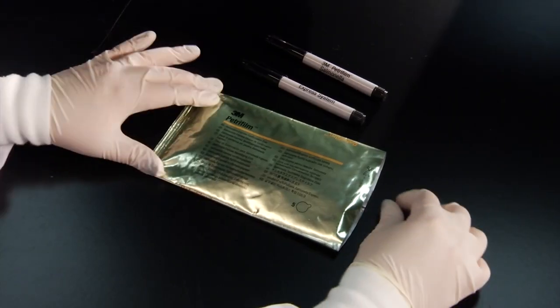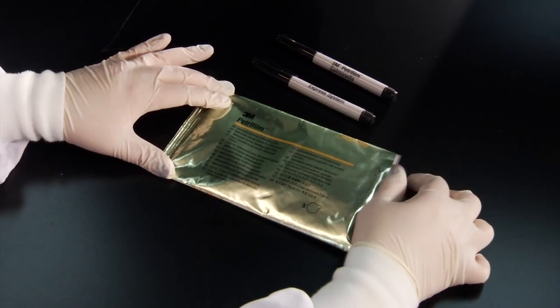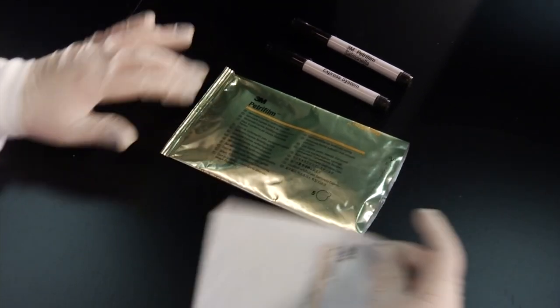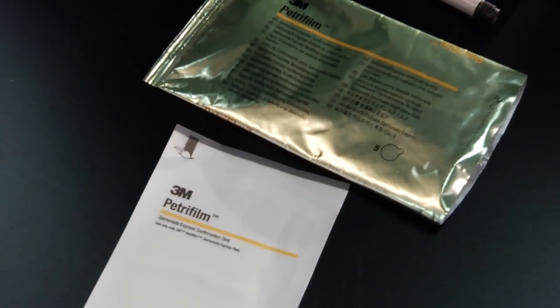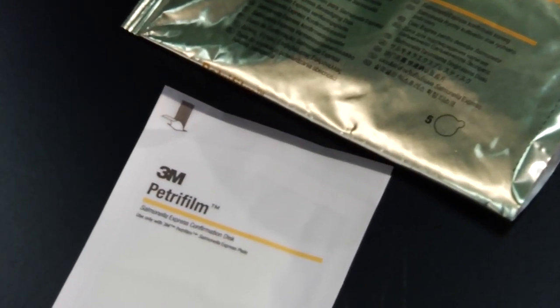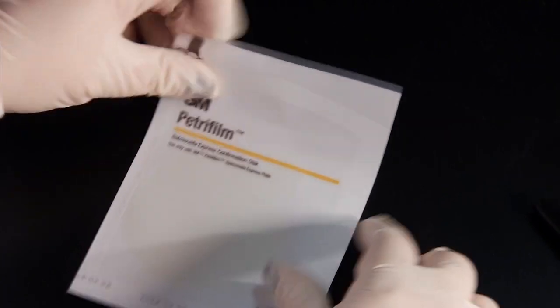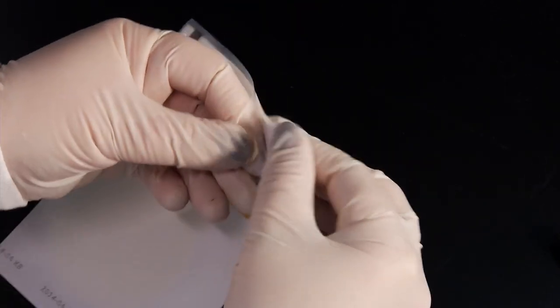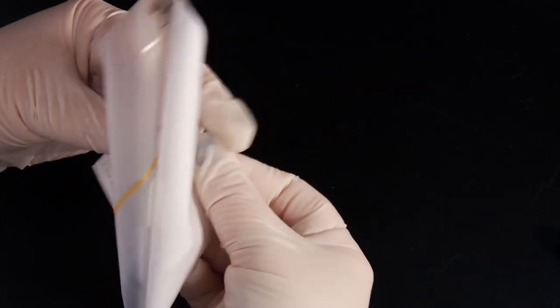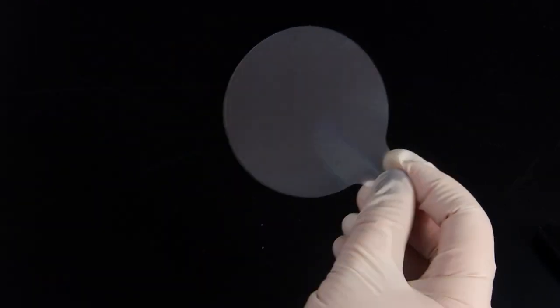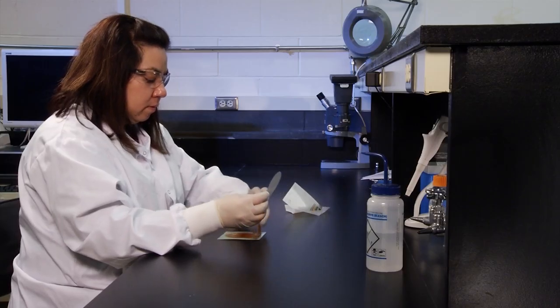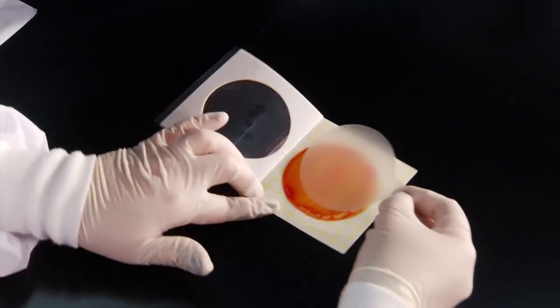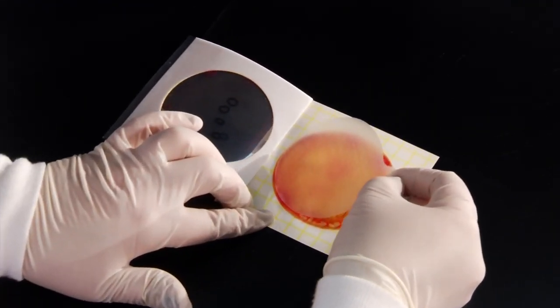To begin biochemical confirmation, remove an individually packaged 3M PetriFilm Salmonella Express Confirmation Disc from its pouch and allow it to come to room temperature. Peel the package to expose the disc's tab. Grasp the tab and remove the disc. Insert the disc by rolling it onto the gel so that you avoid entrapping air bubbles. Then close the plate.